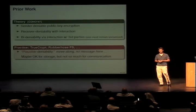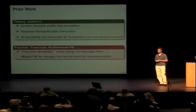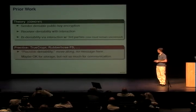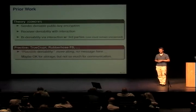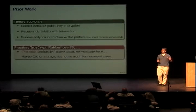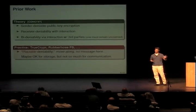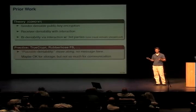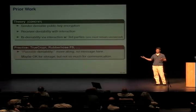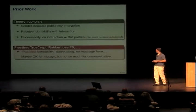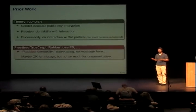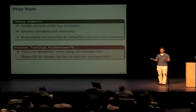In practice, people have also asked for this kind of deniability property — it usually goes by the name of plausible deniability. Programs like TrueCrypt or RubberHose File System allow you to say, if you're coerced to reveal what's on your hard drive, you can say 'this part of the hard drive is actually just random noise, I never stored anything here.' However, that might work well for storage, but it's arguably not very useful for communication, because if you're sending messages back and forth, it's hard to argue there's no message here. We'd like to actually be able to equivocate the message, not just claim there's no message at all.